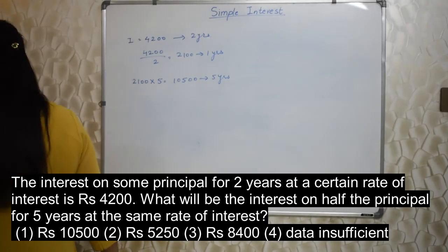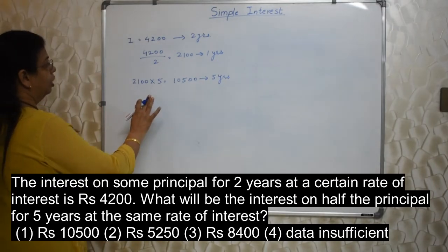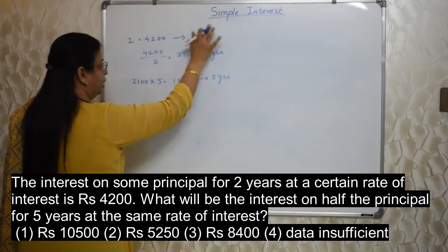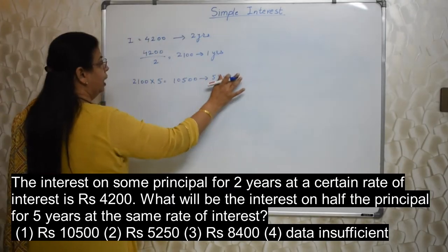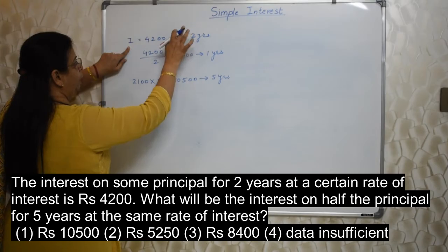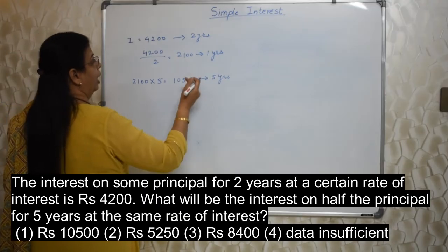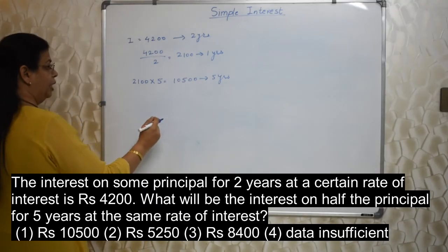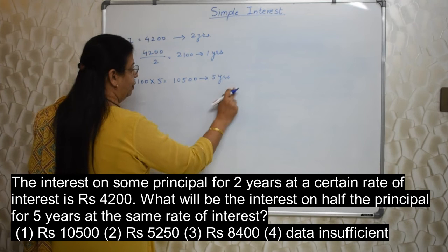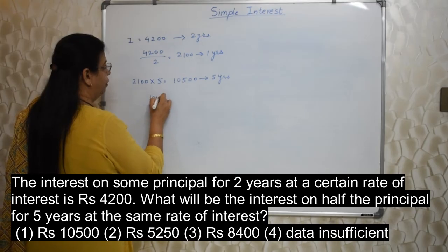Why? Again the reading part plays a vital role. They are asking for half the principal. Here we are assuming same principal. I don't know how much it is, but for this entire calculation we are assuming same principal. So this 4,200 for 2 years, same principal will get 10,500 for 5 years. But now they are saying you have to make that principal half. If we are making the principal half, obviously interest also will be half. If it is 5 years interest, if we half the principal, the interest for 5 years also will be half.